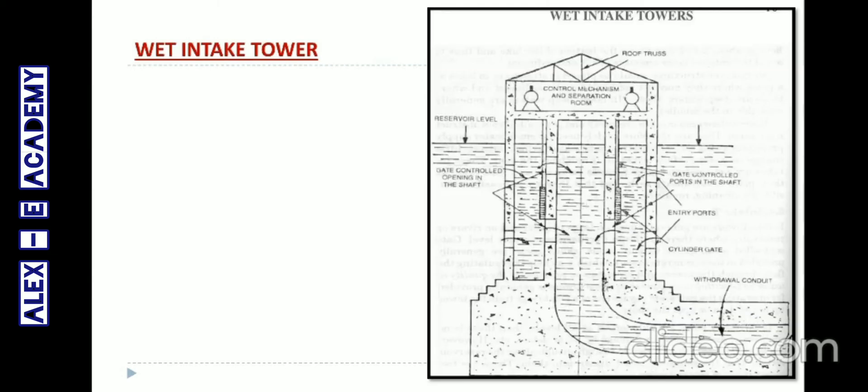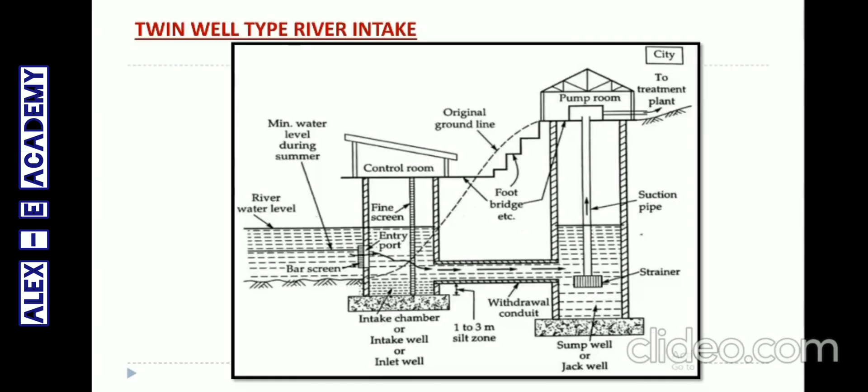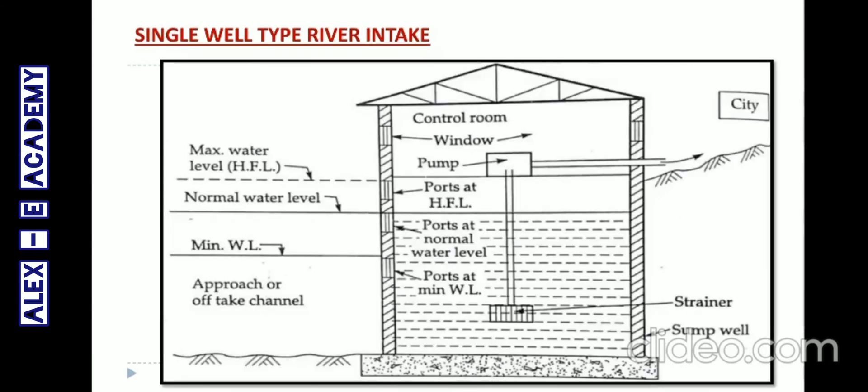The third type is the wet intake tower. The fourth type is the dry intake tower. The fifth type is the twin well type river intake. The next type is the single well type river intake.